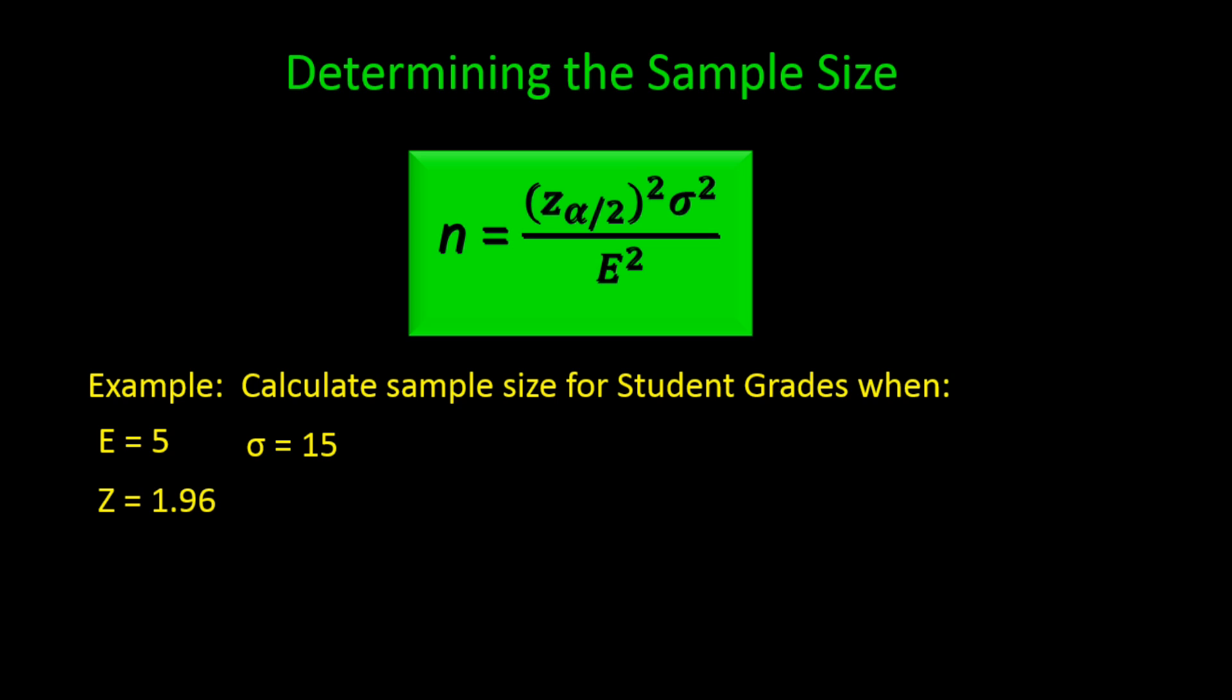So now we are ready to calculate the sample size necessary to give us a 95% confidence interval with a five point margin of error. We have the three numbers we need to calculate the sample size: z, sigma, and E. So let's plug them in the formula and see what we get.